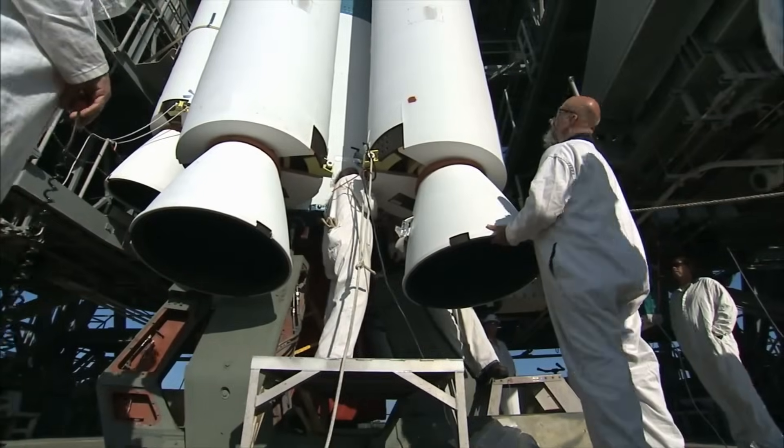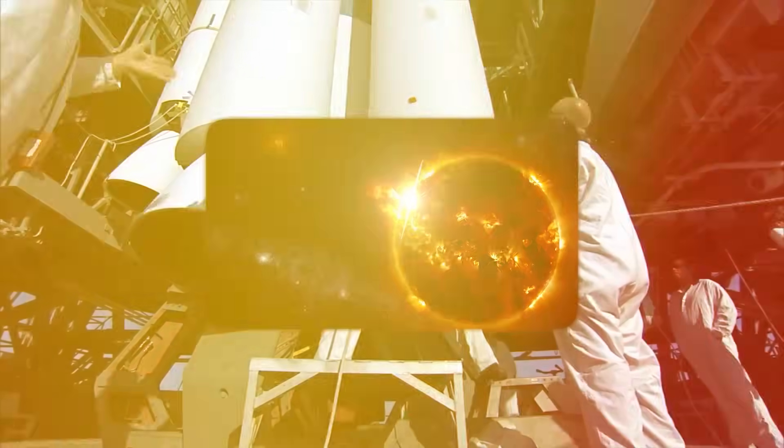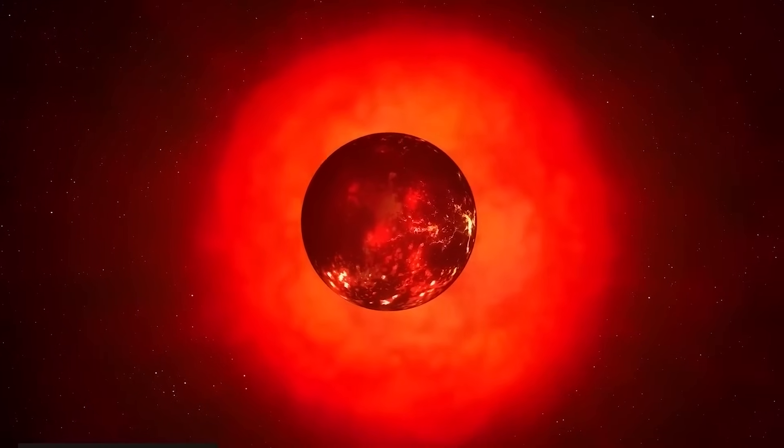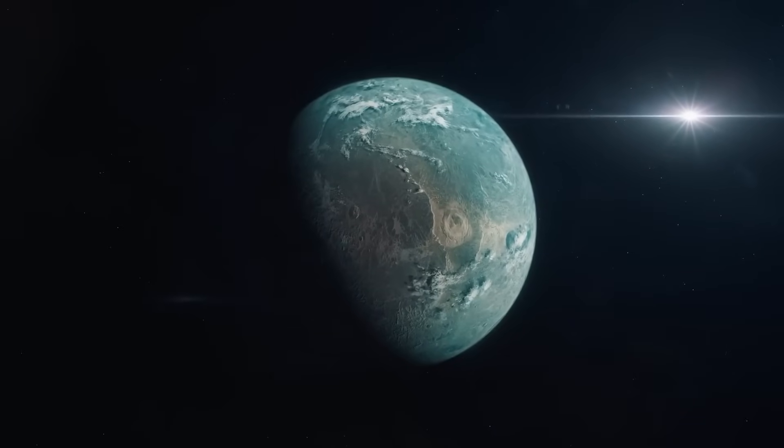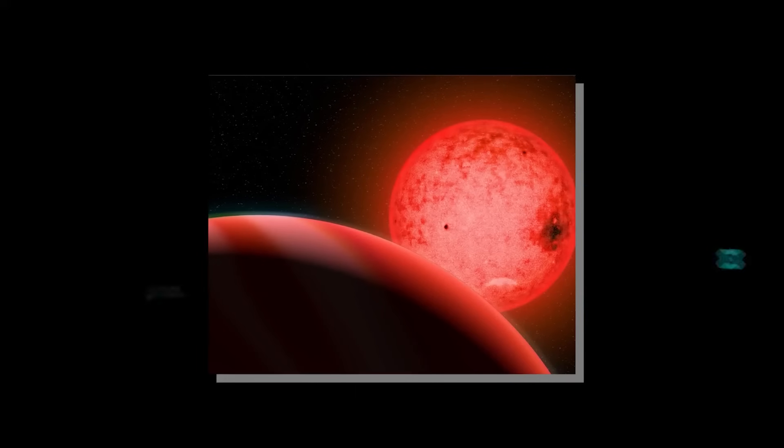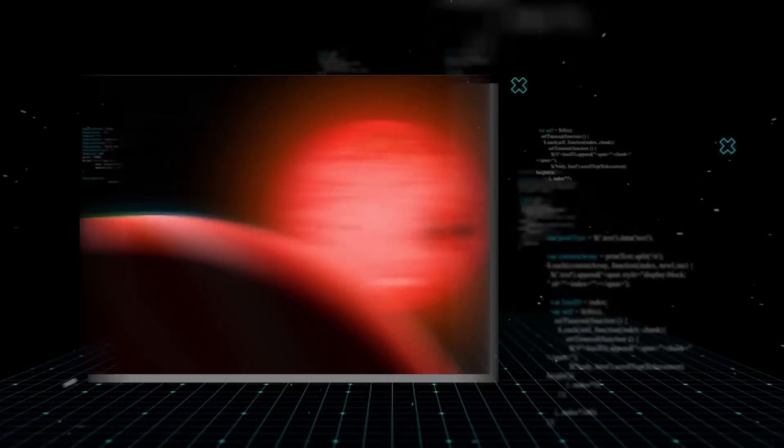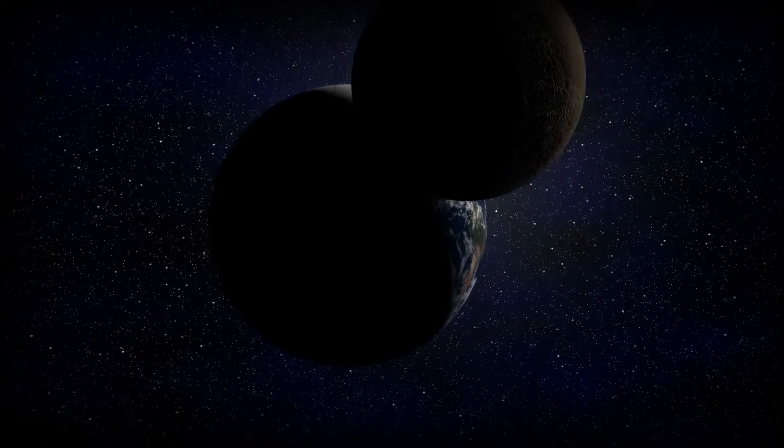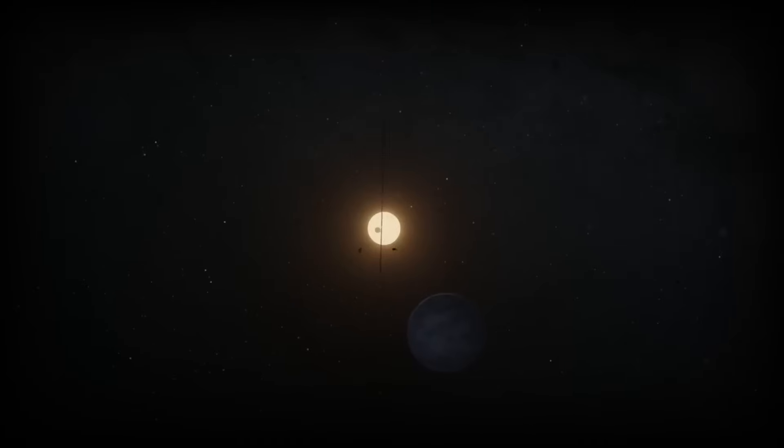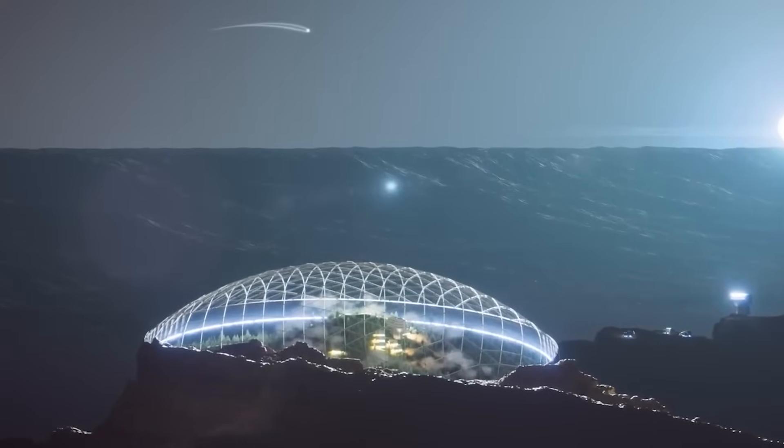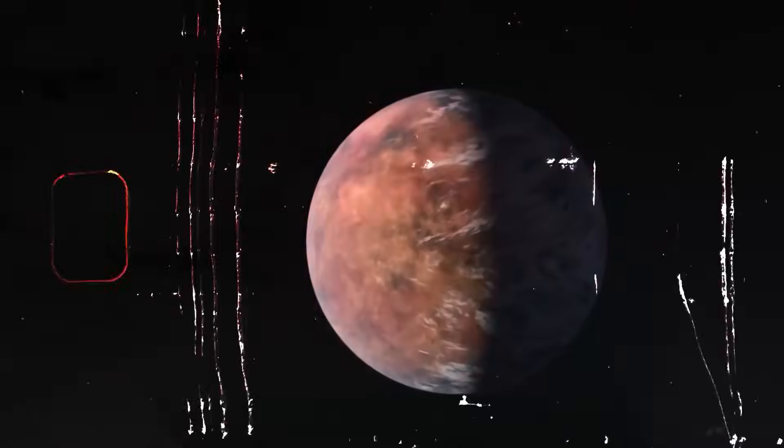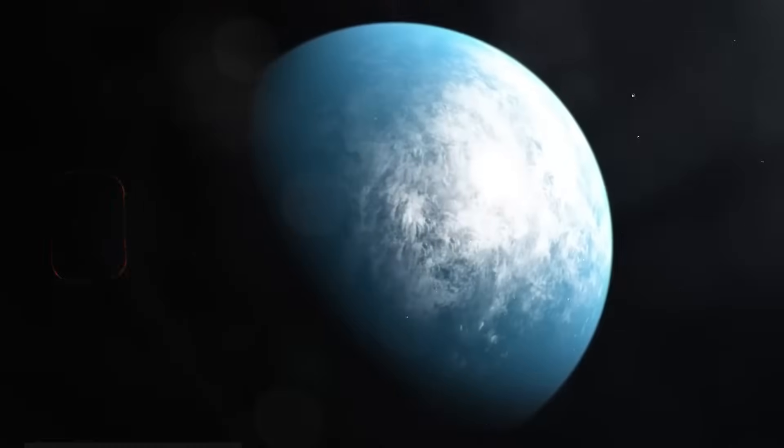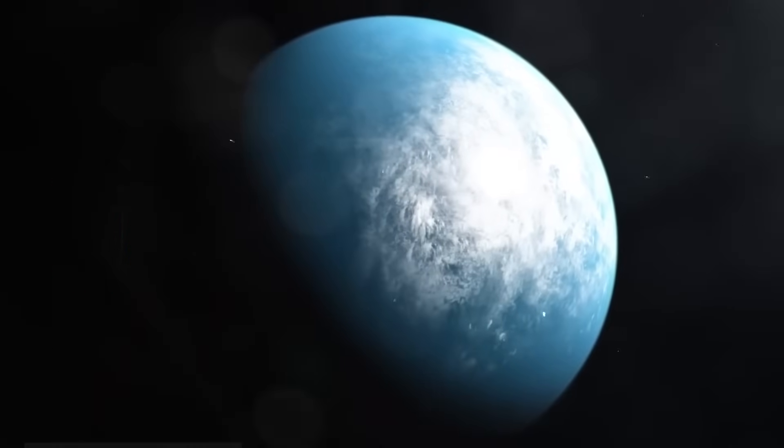Not long after, scientists uncovered TOI-700 e, slightly smaller but still within Earth-size range. It circles the star even faster, finishing an orbit in just 28 days. Both planets are likely tidally locked. What's truly shocking is the idea that two potentially habitable planets could exist side-by-side in the same system. This raises the possibility of not just life but perhaps even ecosystems developing in parallel, completely separate yet under the same star. It's like finding two Earths in the same cosmic street.